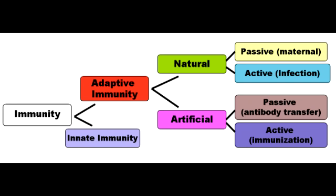Some situations in which you would need to give preformed antibodies to create passive immunity would be after exposure to tetanus toxin, botulinum toxin, hepatitis B, and rabies virus.